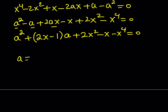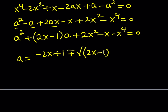a equals negative b — which is the opposite of the coefficient, so negative 2x plus 1 — plus or minus the square root of b squared, which is (2x minus 1) squared, minus 4ac. Here a (the leading coefficient) is 1, so minus 4 times c, which is 2x squared minus x minus x to the fourth. All divided by 2.